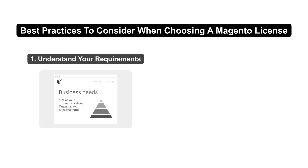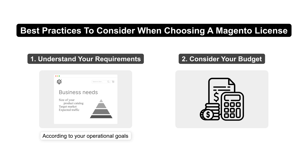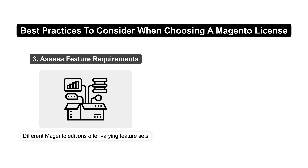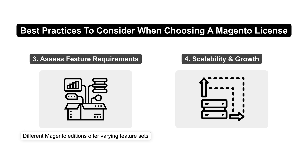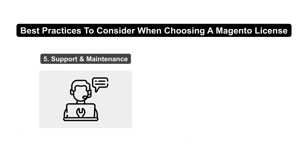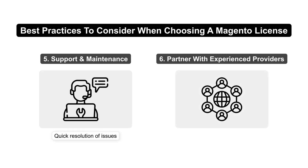Here are the best practices for choosing a Magento license. Understand your requirements and select the edition that aligns with your operational goals. Calculate your total budget, including setup and maintenance, to avoid unexpected financial strain. Match the feature sets of different Magento editions with your business needs, and choose a scalable solution during initial selection to avoid costly migrations. Ensure reliable support and collaborate with experienced Magento developers and hosting providers for optimal performance.